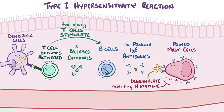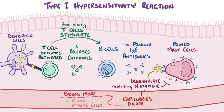The histamine causes blood capillaries to dilate and become leaky, which brings more fluid and immune cells to the area where the mast cells are located. Because the eyes and nose are portals of entry for infections, there are lots of mast cells around those areas for extra protection. So those IgE-primed mast cells release their histamine, which causes nearby capillaries to dilate, flooding the facial tissues with fluid.